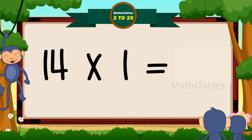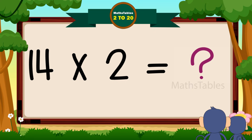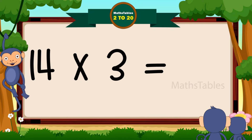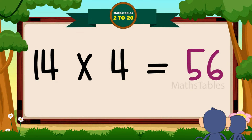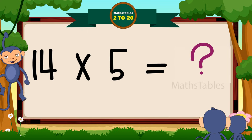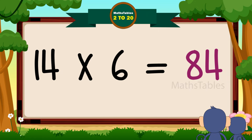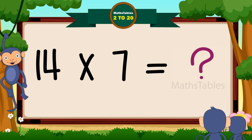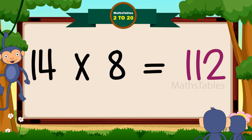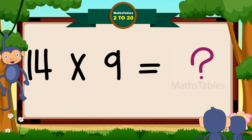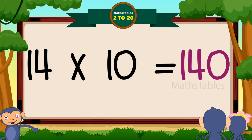14 one's are 14. 14 two's are 28. 14 three's are 42. 14 four's are 56. 14 five's are 70. 14 six's are 84. 14 seven's are 98. 14 eight's are 112. 14 nine's are 126. 14 ten's are 140.